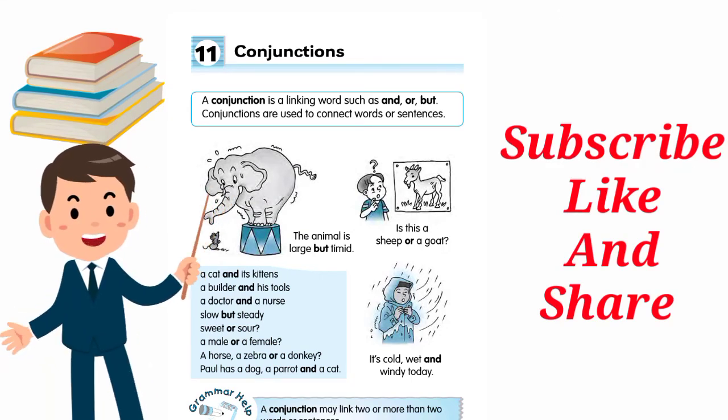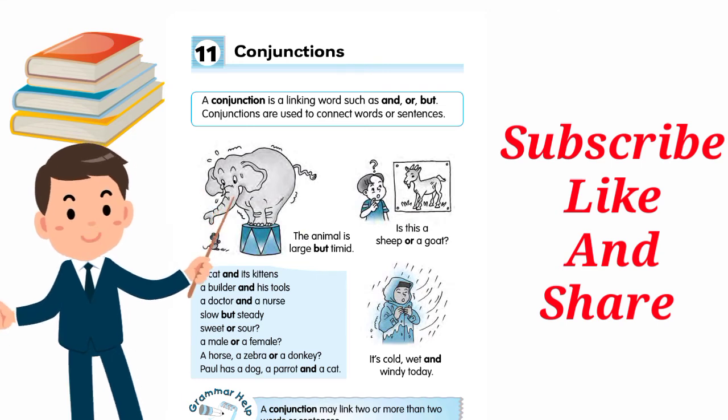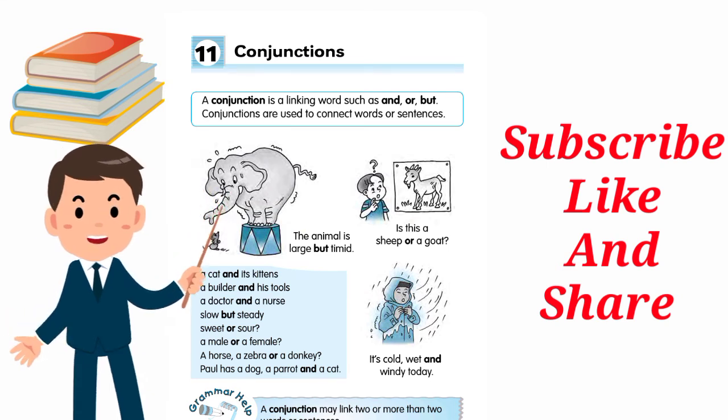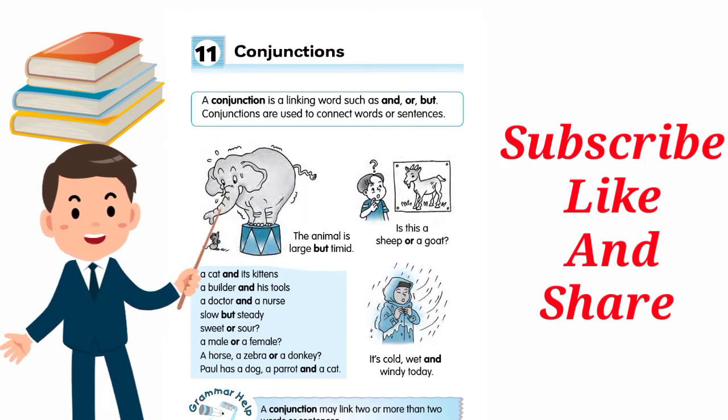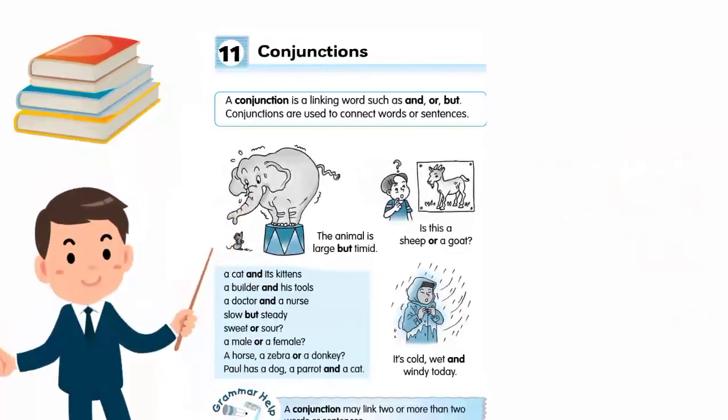We have seen these examples and we now know that the conjunction is used to connect one sentence with another sentence. It should be noticed that a conjunction may link two or more than two words or sentences. This means that conjunction is used to connect two or more words or sentences together.